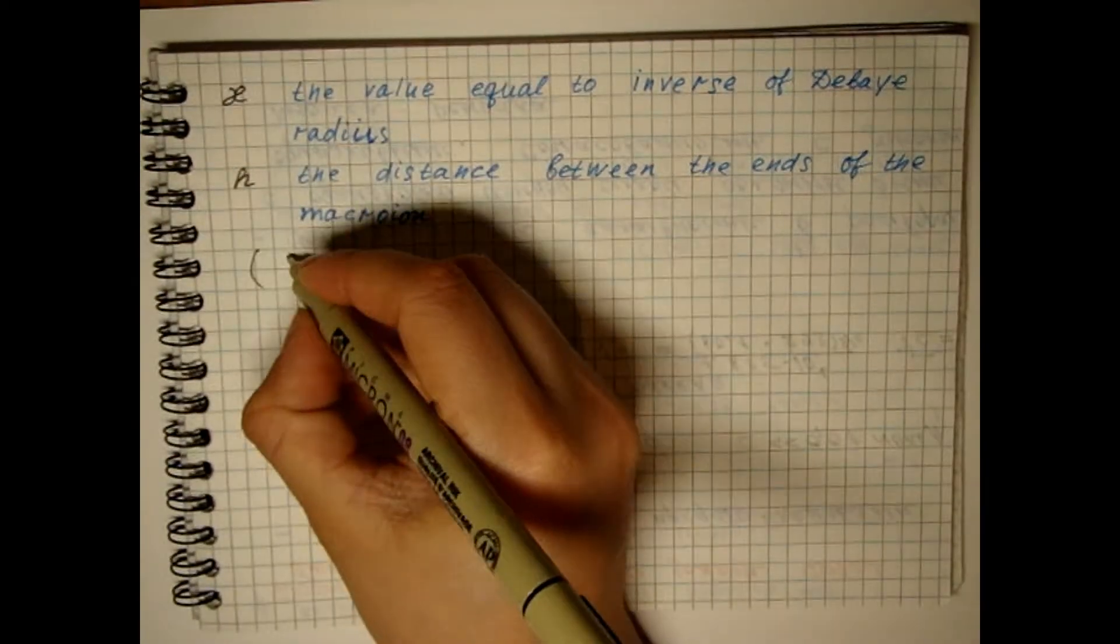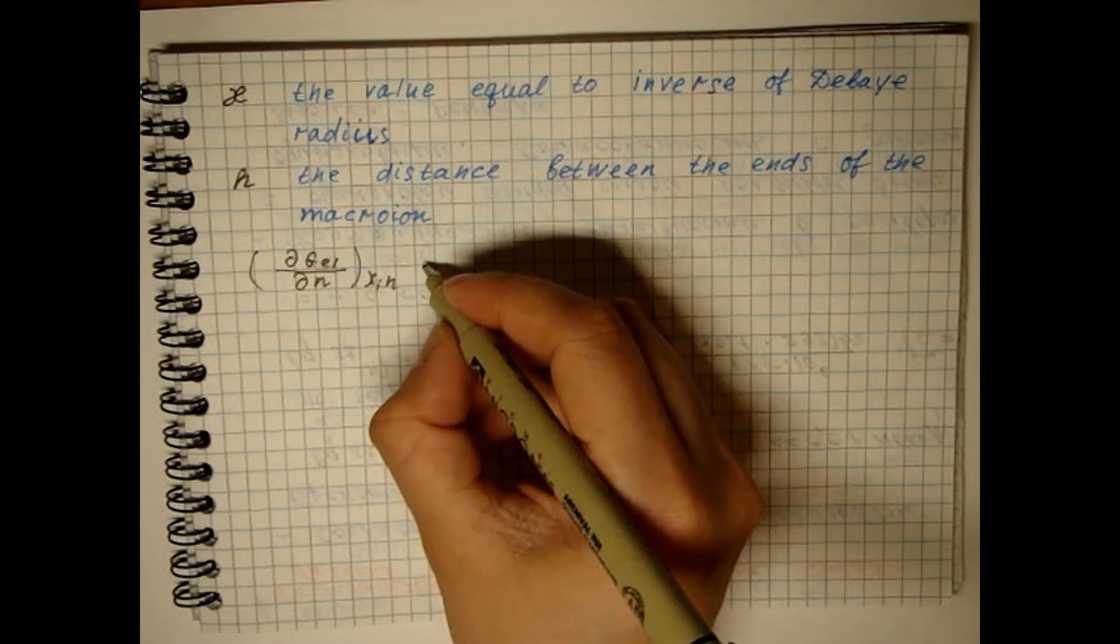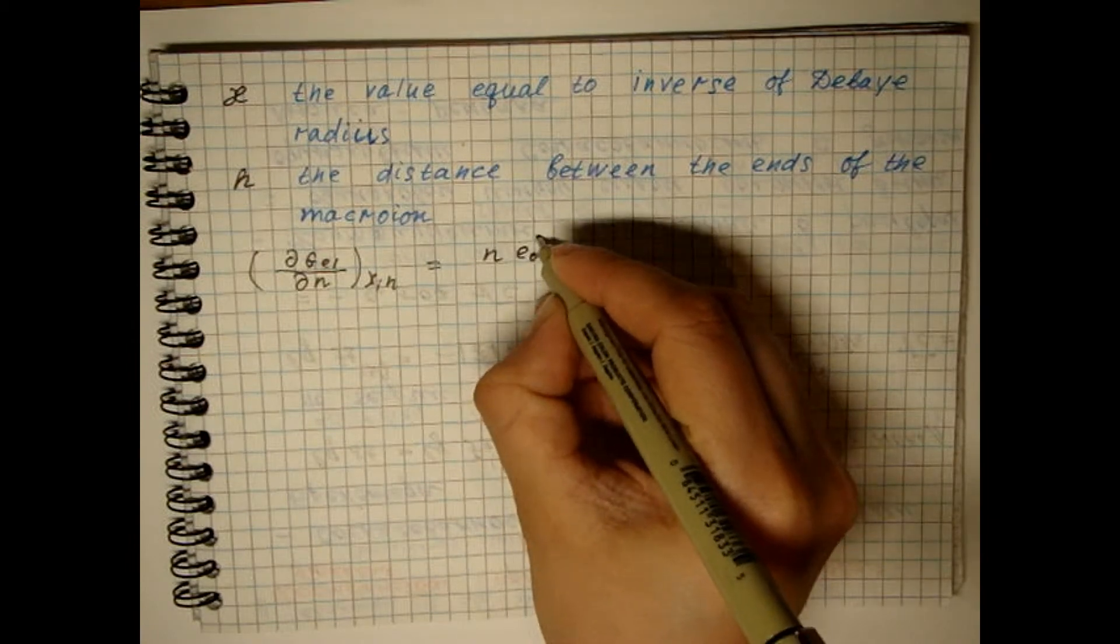This implies the change in free electrostatic energy can be calculated on the basis of experimental titration curves.